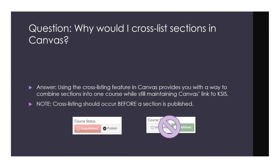Many instructors teach multiple sections of the same course and wish to merge students together to reduce work and increase student diversity. Cross-listing still maintains the link from the Canvas course to CASIS. You should cross-list sections before they are published and students have submitted any assessments, since students in the section you cross-list will lose any assignments or grades already posted.